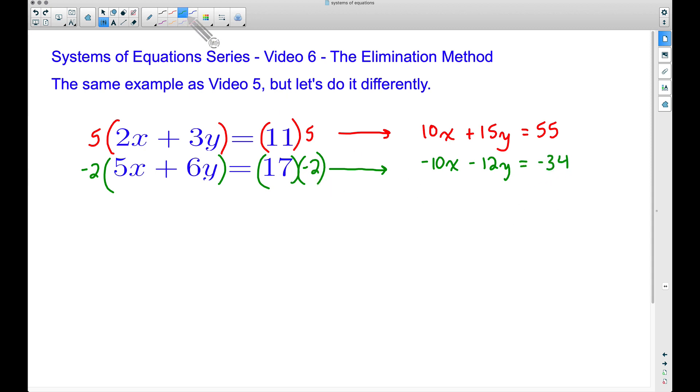So now when we go to solve this equation, the x's get eliminated. Now whereas in video 5 we got rid of the y's first. Let's combine like terms. 15y minus 12y is 3y. This is equal to 55 minus 34 is 21.